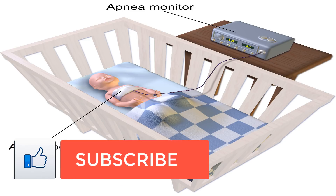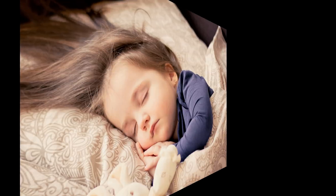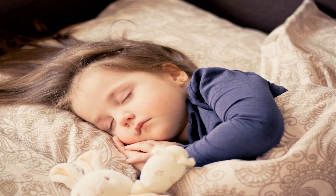Some medications can also cause a type of central sleep apnea called drug-induced apnea. Opioid drugs are powerful painkillers that can lead to irregular breathing patterns. In some cases, you may temporarily stop breathing as part of this irregular pattern. Drugs that can contribute to central sleep apnea include codeine, morphine, and oxycodone. If your doctor can't identify the cause, then you have idiopathic central sleep apnea.